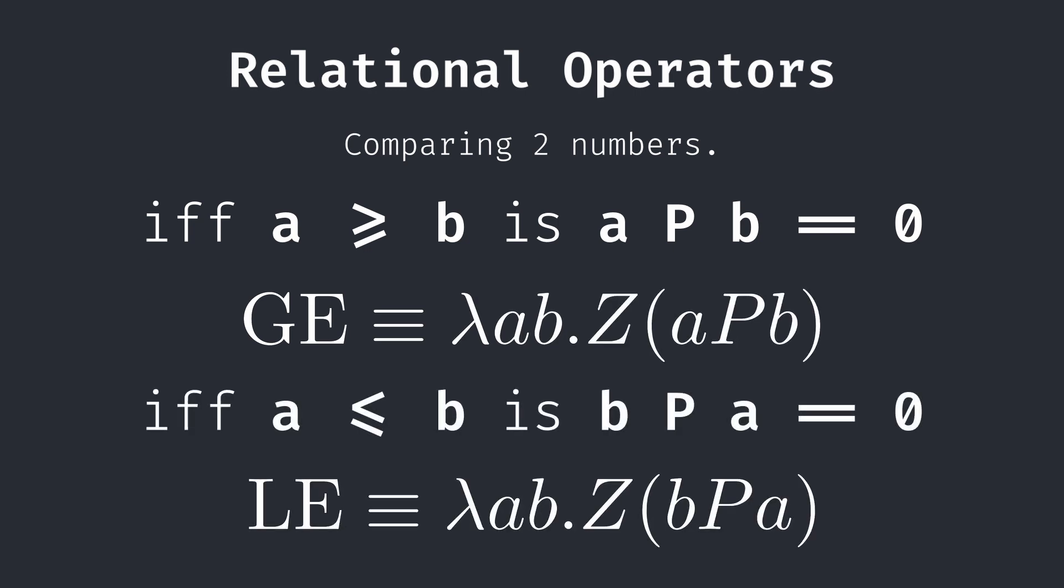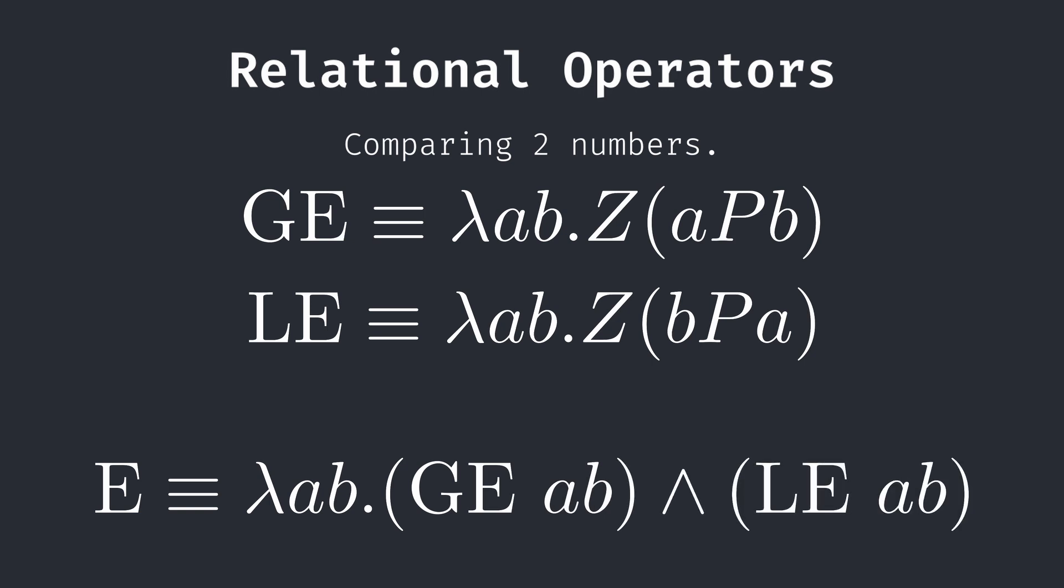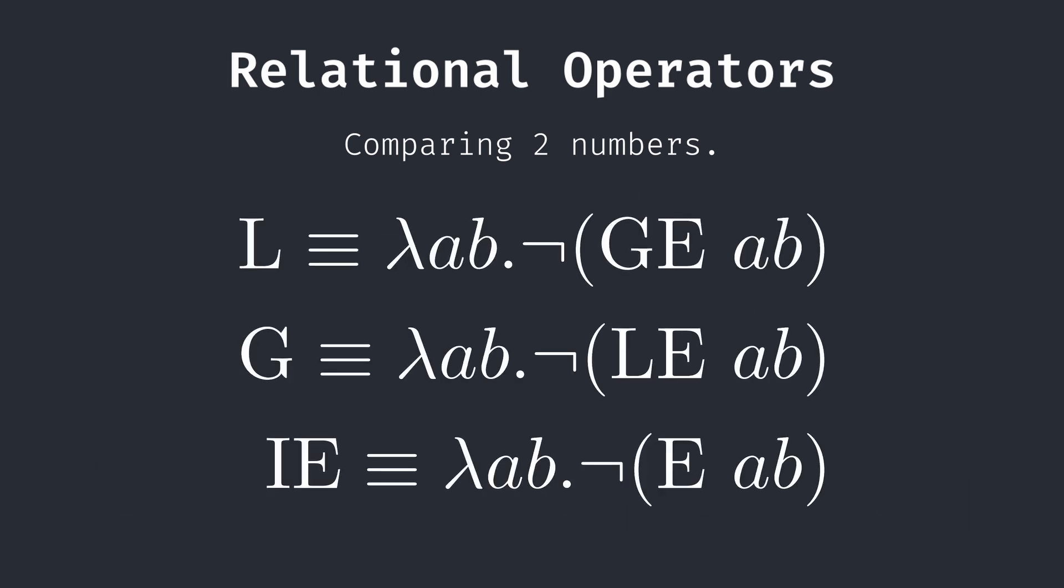Now we can write the greater than or equal to abstraction with our 0 function. Less than or equal to can be defined just by swapping a and b. The equality function can be achieved by anding these two functions. Similarly, we can define less than, greater than, and inequality.